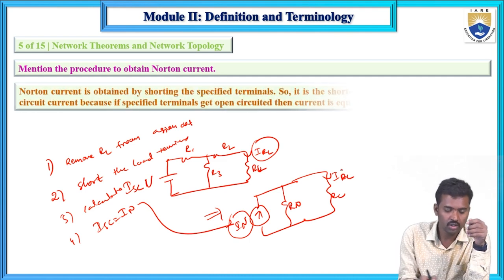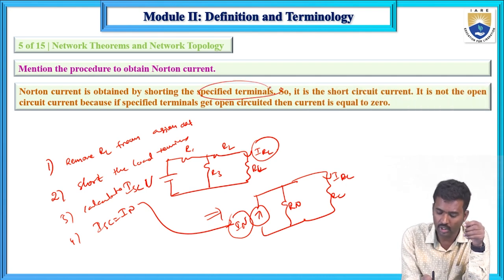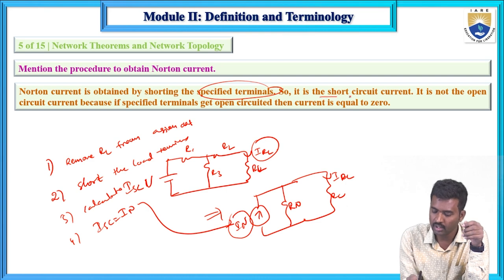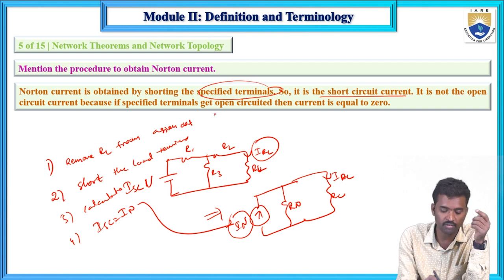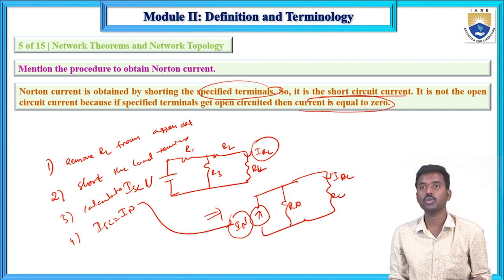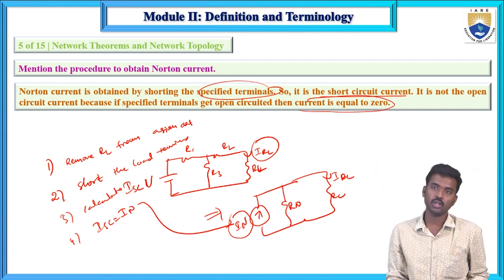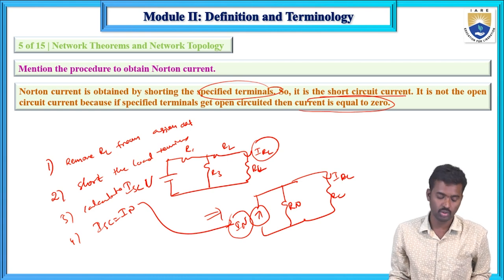The Norton's current is obtained by shorting the specified load terminals and measuring the short-circuit current. It is not the open-circuit current — the open-circuit current is always zero because no current flows through an open circuit. So the procedure is: remove the load resistance, short the load terminals, and calculate the short-circuit current.